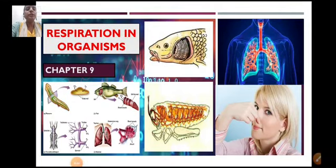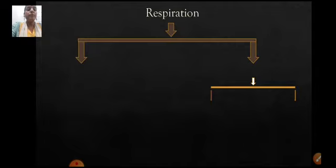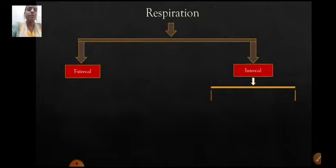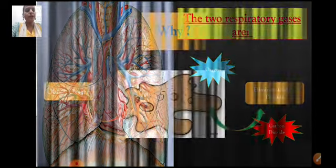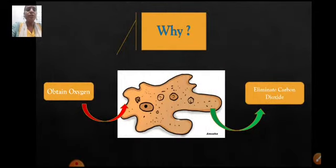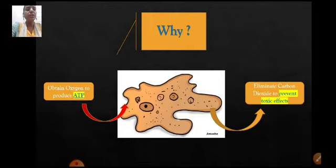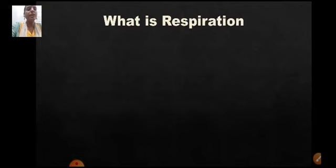Welcome students to a new video for this week. We are discussing chapter 9: Respiration in Organisms, but a different topic. A short recap: we have seen what respiration is, that it can take place in two phases — external and internal respiration. Internal respiration can be of two types: aerobic and anaerobic. The two respiratory gases are oxygen and carbon dioxide. We need oxygen to produce ATP in the cells and we need to eliminate carbon dioxide to prevent its toxic effects on the cells.